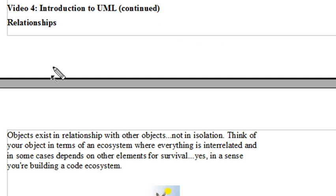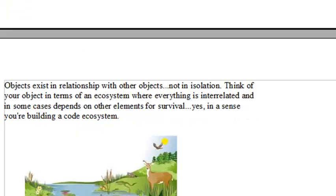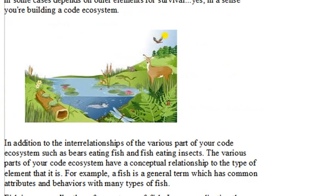Now, objects themselves do not exist by themselves in isolation. They're typically related to something. And you can think of it kind of a code ecosystem, where everything in the system actually interrelates in some way or another. There are cases, obviously, where some things are somewhat isolated, but yet it has to exist in a system.